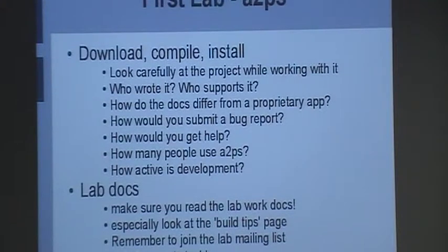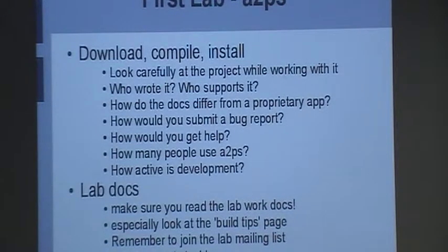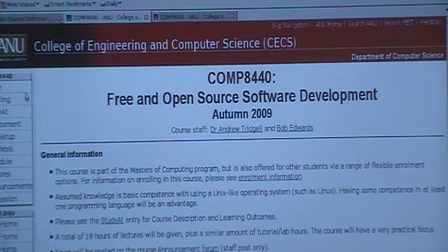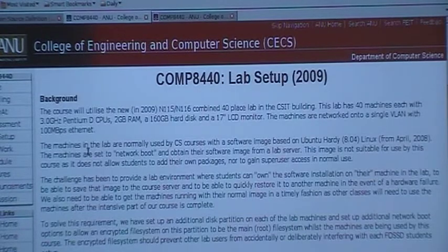So while you're looking at the project, have a careful look at the website for the project. There's more than one website. See if you can work out what the official one is. Then go back and check, is it really the official one? Or is there another one? It's hard to tell with A2PS. Who wrote it and who supports it? That's quite an interesting question with A2PS. How recently has it been developed? When were the last changes? How do the docs differ from a proprietary application? Have a look at the documentation and think about, would a proprietary application have documentation in that style? How would it differ? How do you submit a bug report? How do you get help? How many people use it? See if you can find some of the mechanisms for finding out how popular a project is, or at least how relatively popular it is. How active is the development? How recently have people done commits?